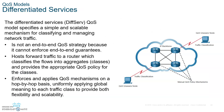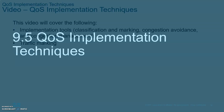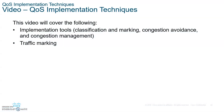Differentiated services, on the other hand, is a model that specifies a simple, scalable mechanism for classifying and managing services. It's the more scalable technique — it provides many different levels of quality and a lot of flexibility in how you classify your packets as they come in.